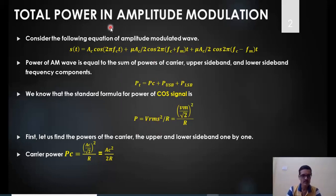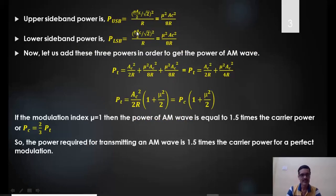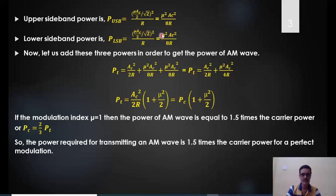Starting with PC: the amplitude of the unmodulated carrier is Ac, so PC = (Ac/√2)² / R = Ac²/2R. Moving to the upper and lower sidebands, the amplitude is μAc/2, so the power is (μAc/2 / √2)² / R = μ²Ac²/8R. Since the amplitude is the same for the LSB, the power required to transmit the LSB is also μ²Ac²/8R.